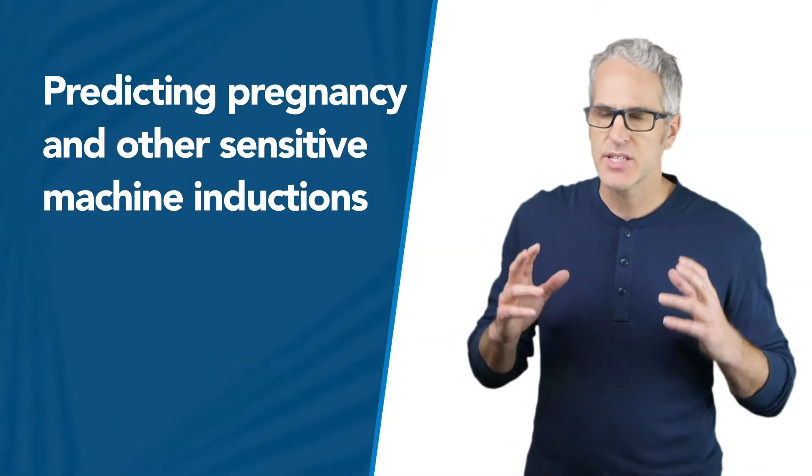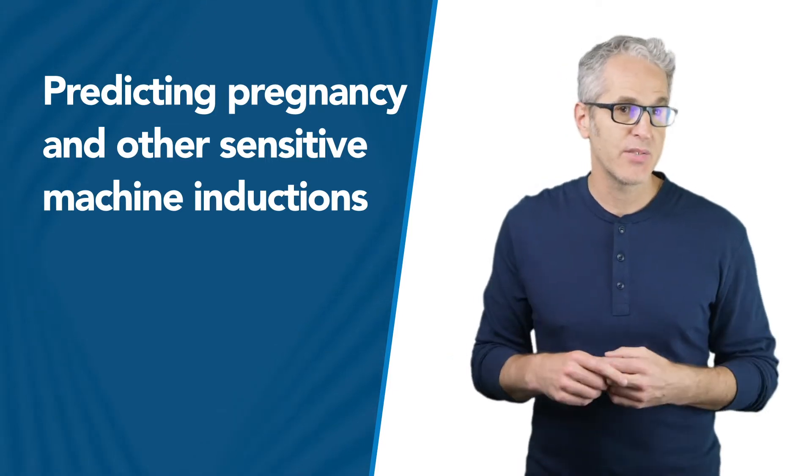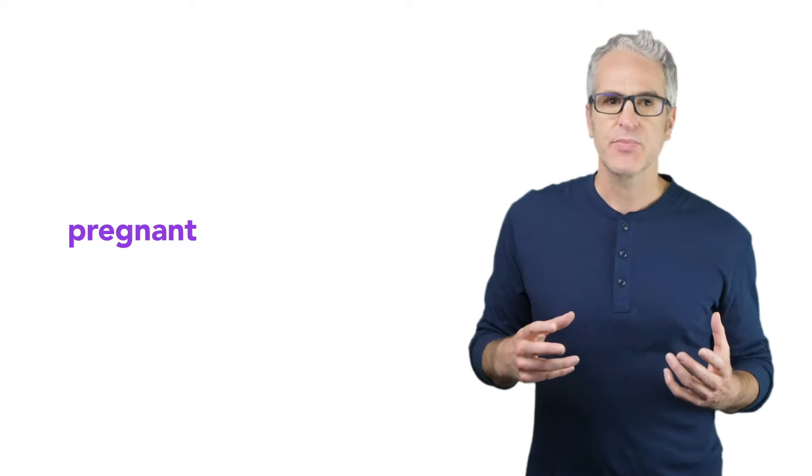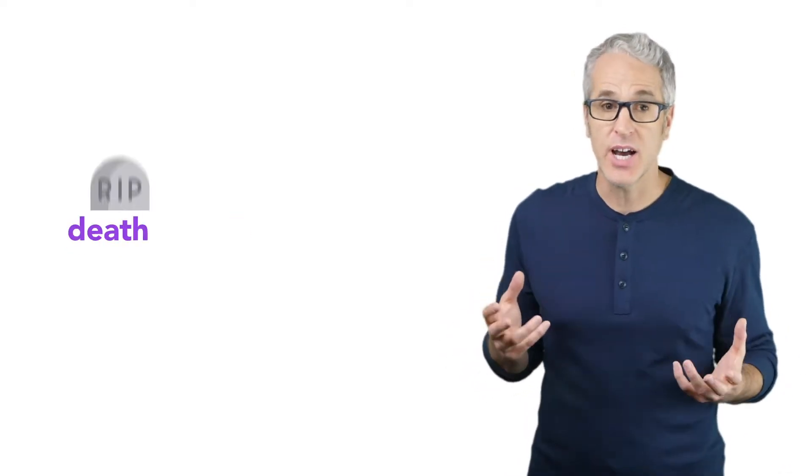Machine learning predicts sensitive information about you, such as your sexual orientation as we discussed in the video on the accuracy fallacy, whether you're pregnant, whether you're going to quit your job, and whether you're going to die.